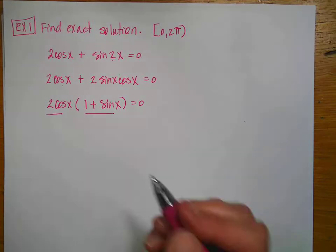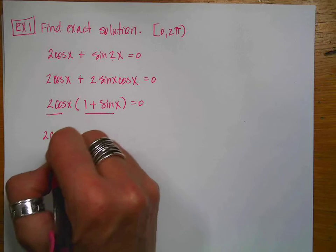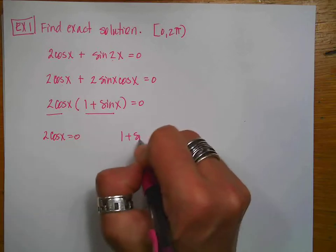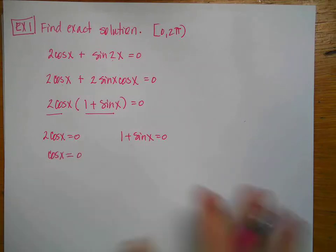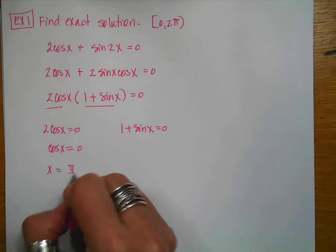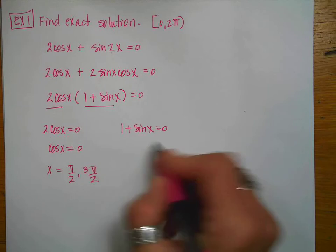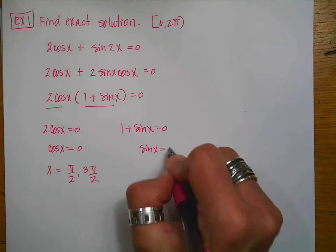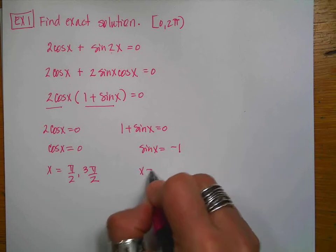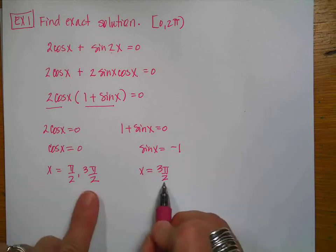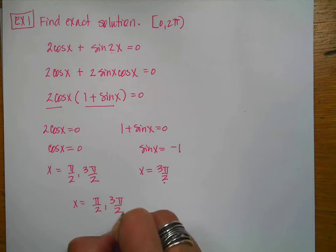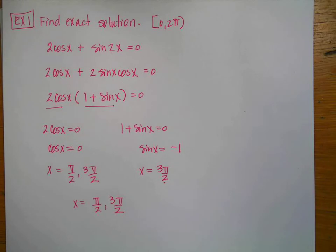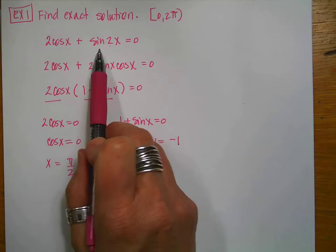Now I can set my two baby equations equal to zero: 2cos(x) = 0 and 1 + sin(x) = 0. From the first, cos(x) = 0, which occurs at π/2 and 3π/2. From the second, sin(x) = −1, which happens at 3π/2. That answer is redundant, so I'm only going to report it once. My final answers are π/2 and 3π/2. I used the double angle formula to simplify this trig equation.